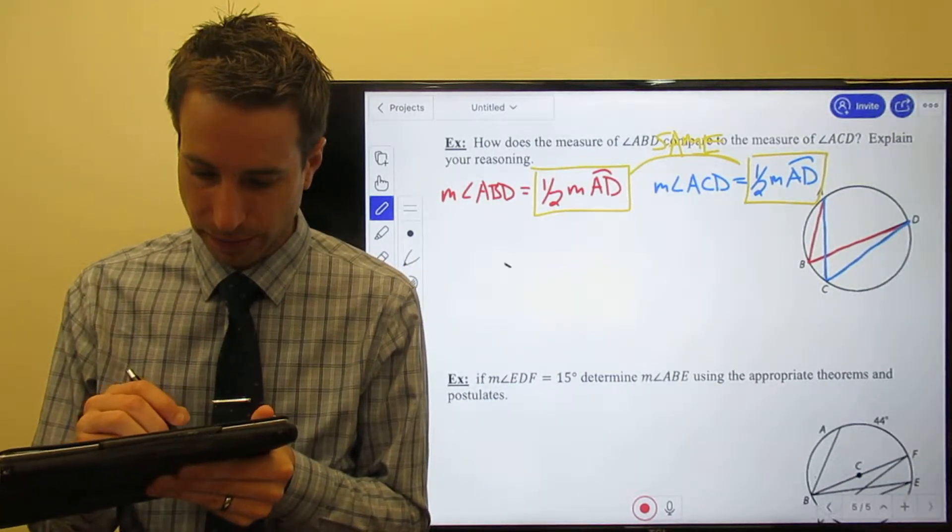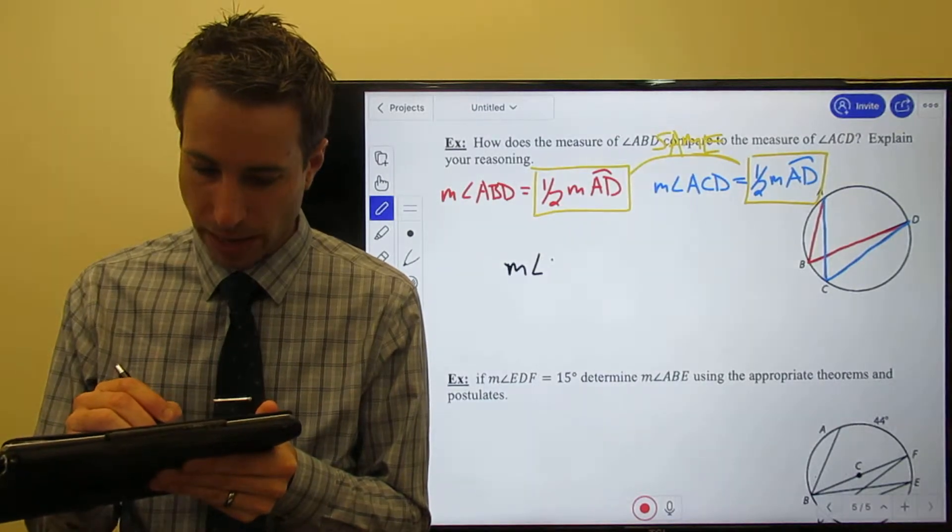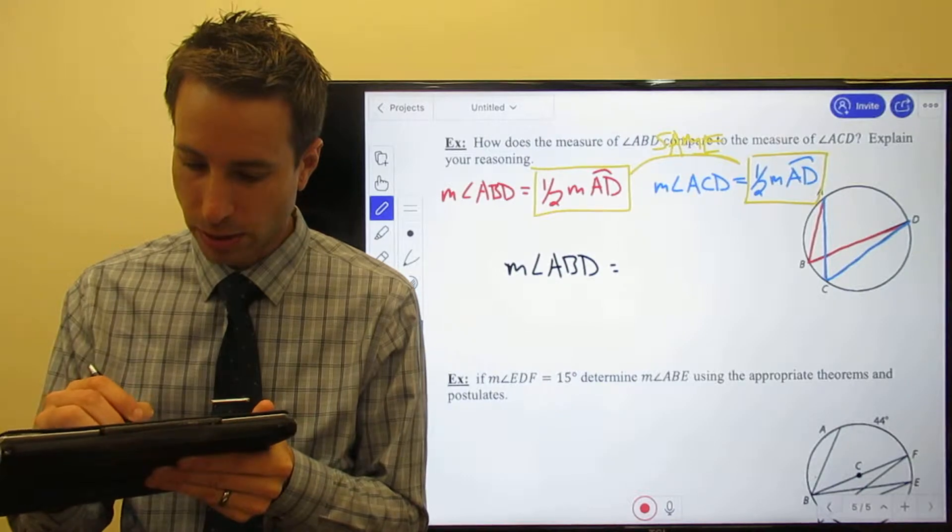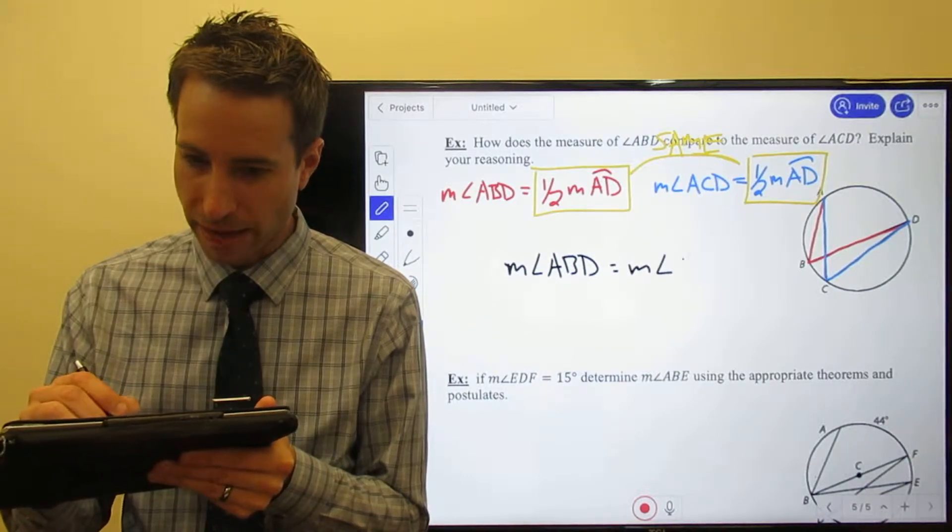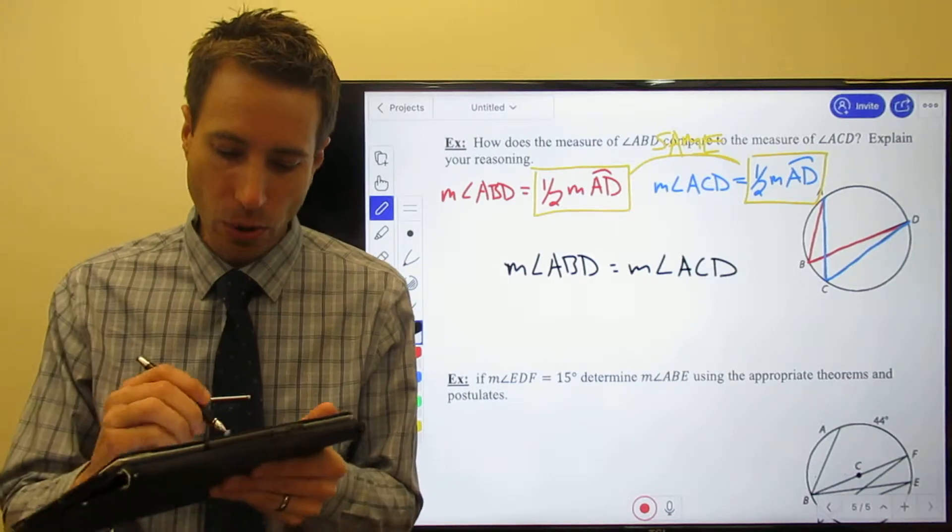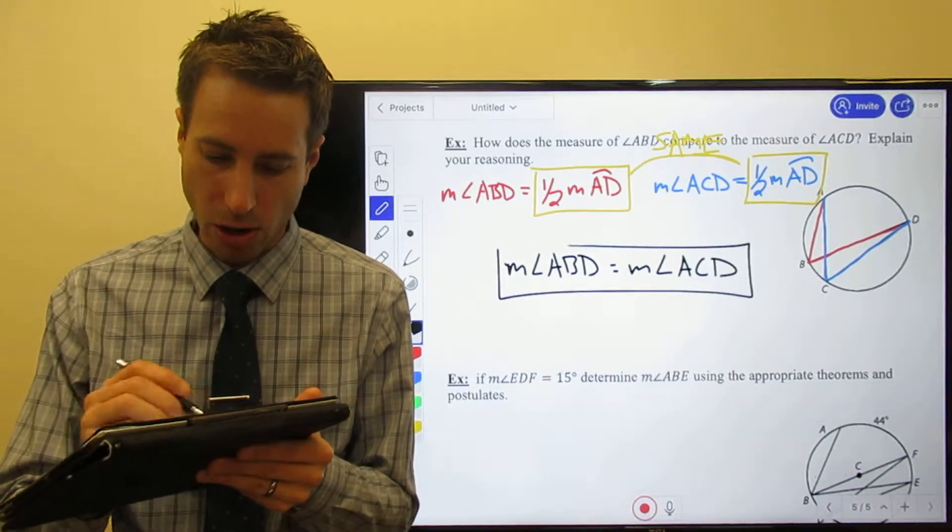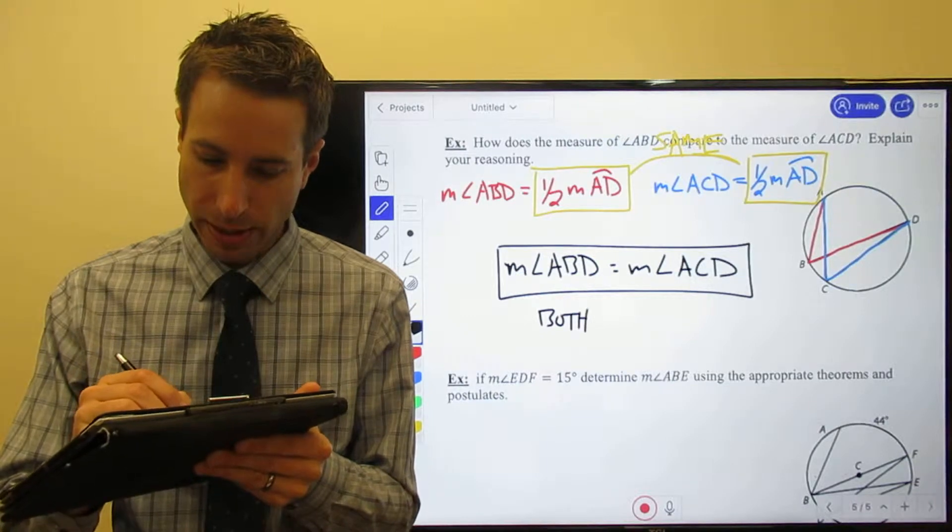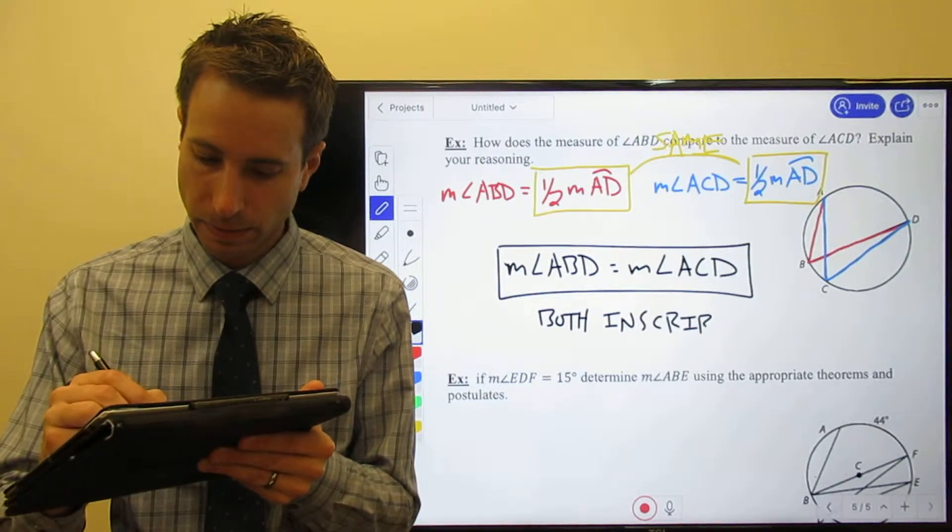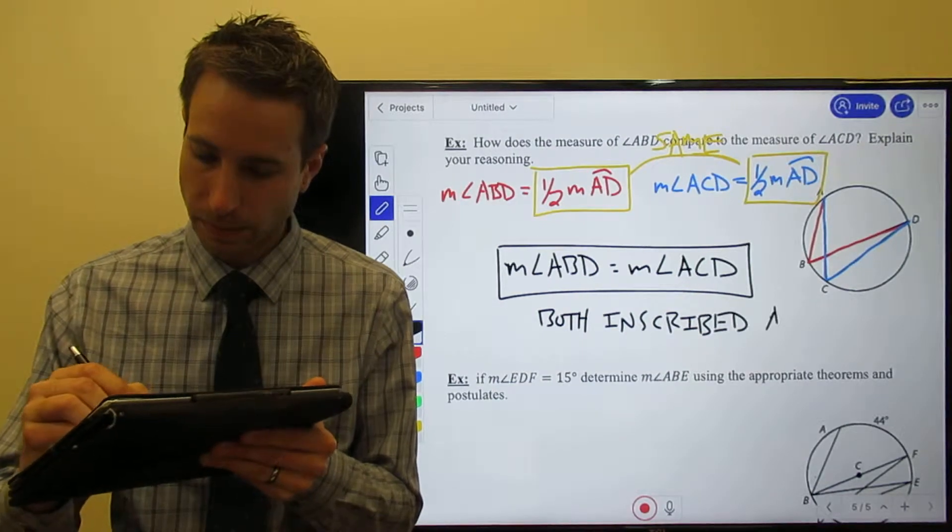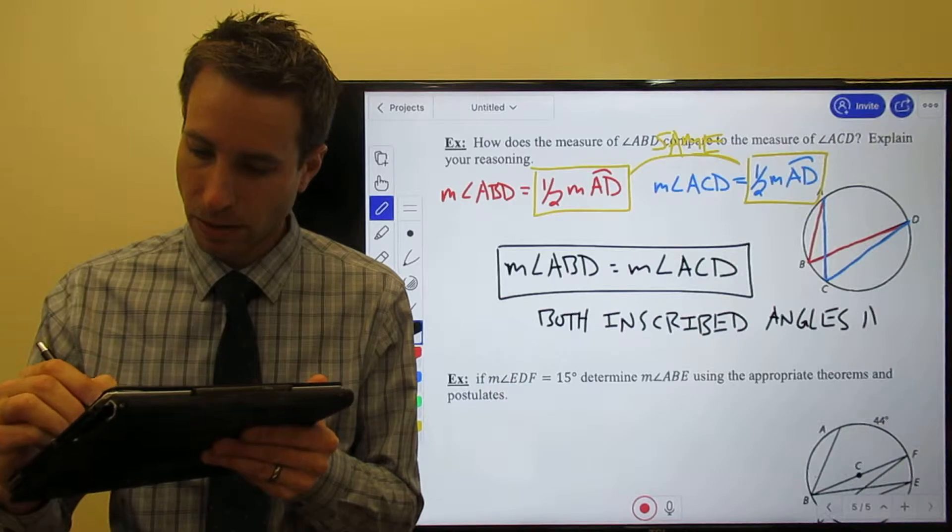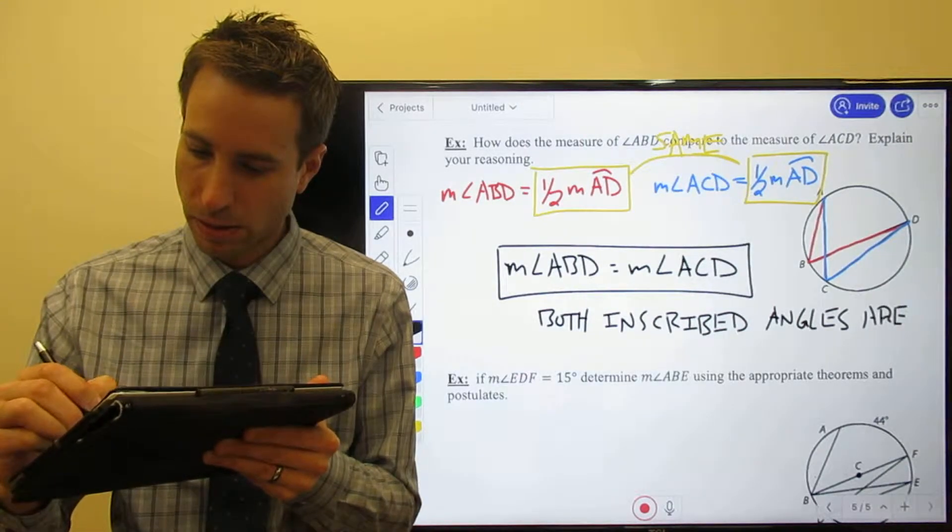The measure of angle ABD is equal to the measure of angle ACD, right? What does that mean? Both angles are the same. Both inscribed angles are equal.